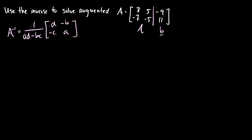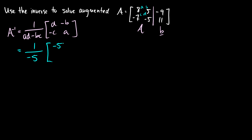Let's plug in the numbers. We compute 1 over (ad minus bc): a times d is 8 times negative 5 which is negative 40, and b times c is 5 times negative 7 which is negative 35. So we get negative 40 minus negative 35, which equals negative 40 plus 35, giving negative 5. So the scalar is negative 1 fifth. Our matrix entries are: d becomes negative 5, b flips so 5 becomes negative 5, negative 7 becomes 7, and a gives us 8.